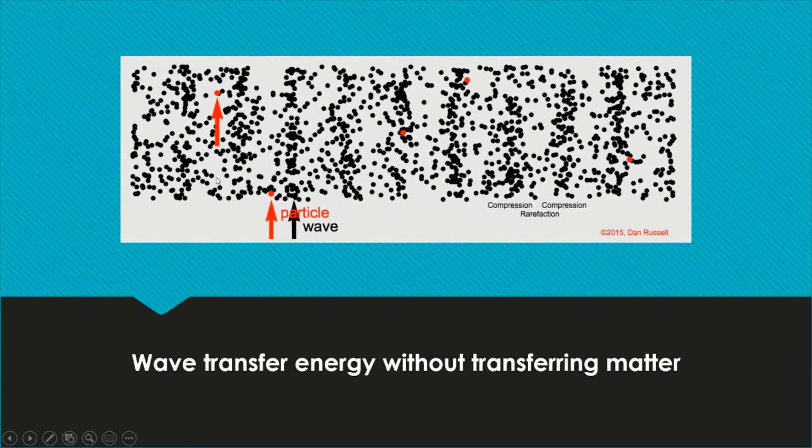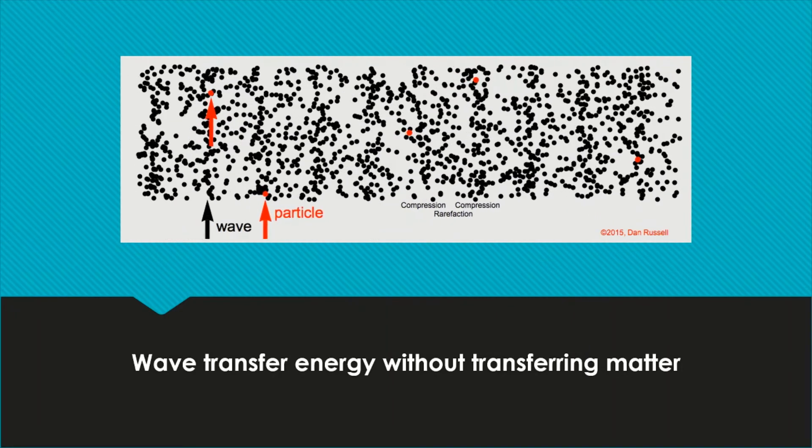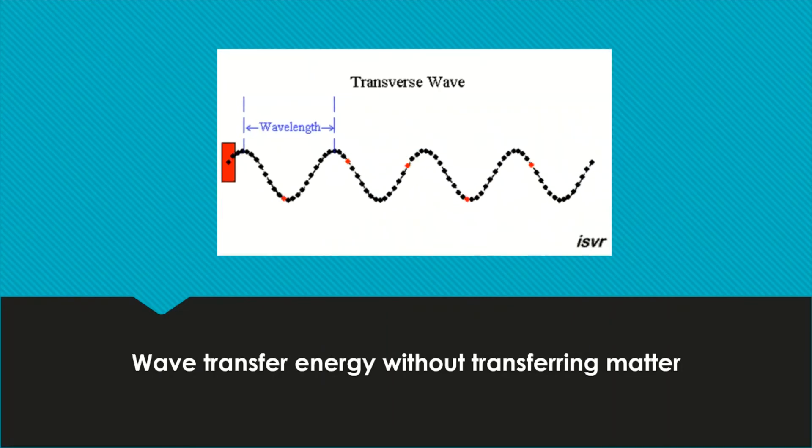So this tells us very clearly that wave transfers energy without transferring the matter. The particles of the matter do not move together with the wave, together with the energy of the wave.